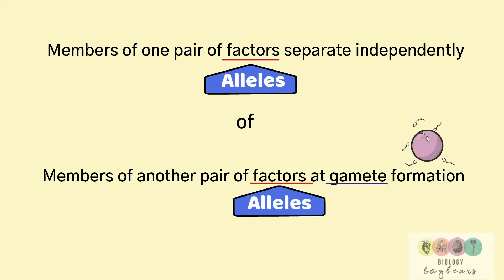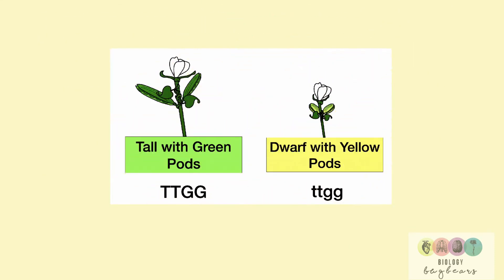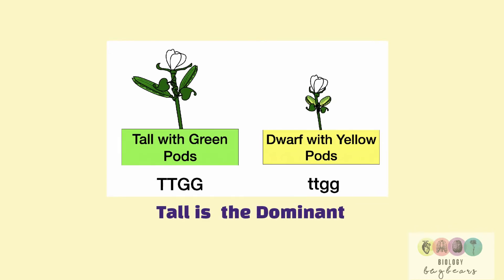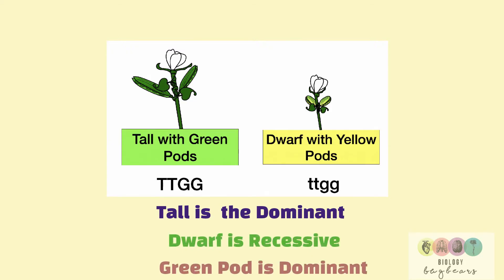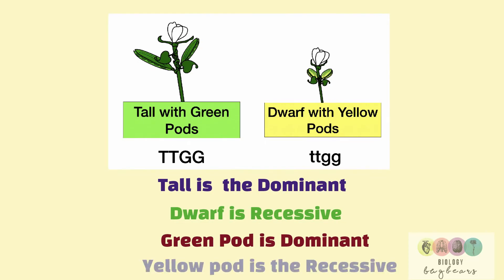The most important thing to remember about this law is that we're talking about two different genes, so two different traits. For example, we'll look at a plant with two traits: tallness and pod colour. With tallness, tall is dominant and dwarf is recessive. With pod colour, green pod is dominant and yellow pod is recessive.